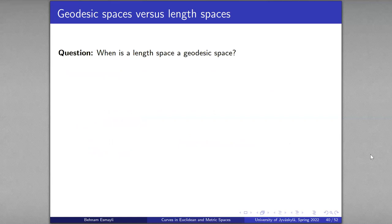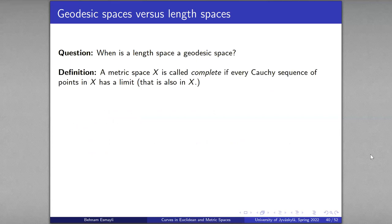The main question we answer today is: when is a length space a geodesic space? We saw that geodesic spaces are length spaces, but what about the reverse? What is wrong with the plane minus one point that prevents it from being geodesic? To answer this, we need to recall some standard definitions.